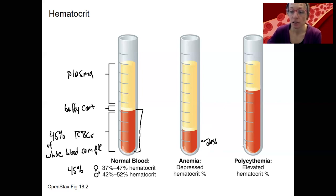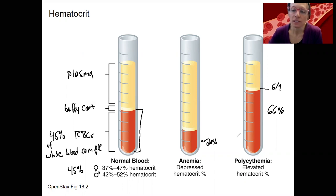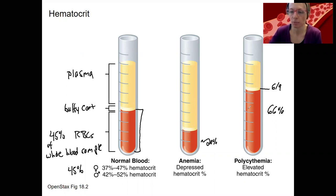Polycythemia is high levels of hematocrit — a higher percent than normal. In this example, counting six out of nine cells, that's over 60%, about 66%, which is a high hematocrit percent. You might think that's great — that's why people take EPO, to increase their hematocrit — but this high is actually a problem.